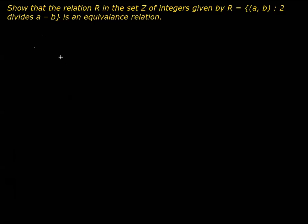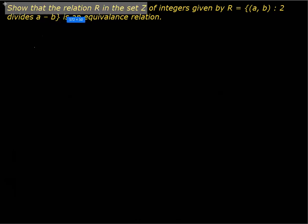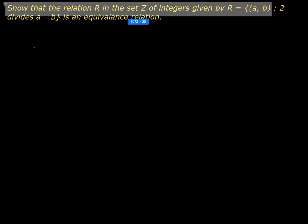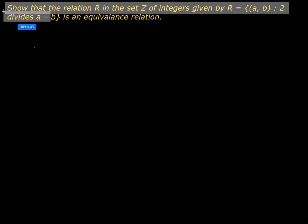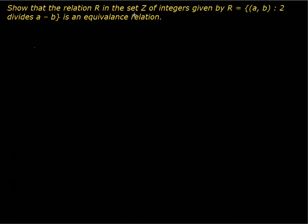In this video I'm going to show the working of a question from the chapter on relations. The question says: show that the relation R in the set of integers, given by R = {(a, b) : 2 divides (a - b)}, is an equivalence relation. So we need to show that this is an equivalence relation.